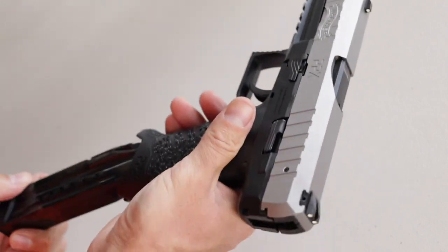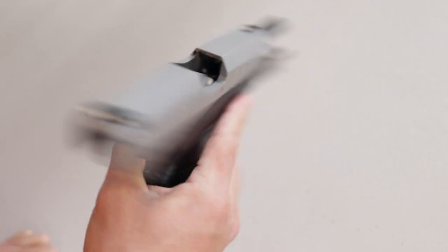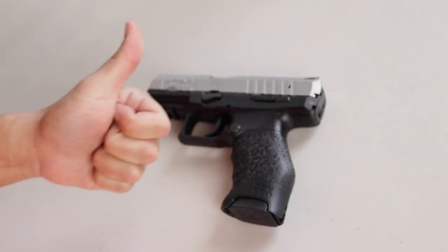I also like to make sure my slide is going to lock back on an empty chamber. So I insert an empty magazine. Pull the slide back. And it should lock back. It does, so I'm going to release the slide stop lever. Let the slide go home. And I'm done.